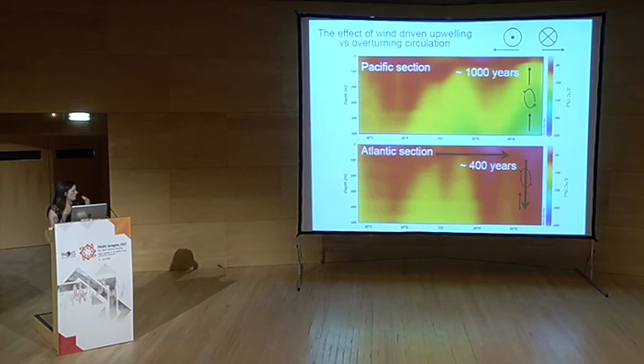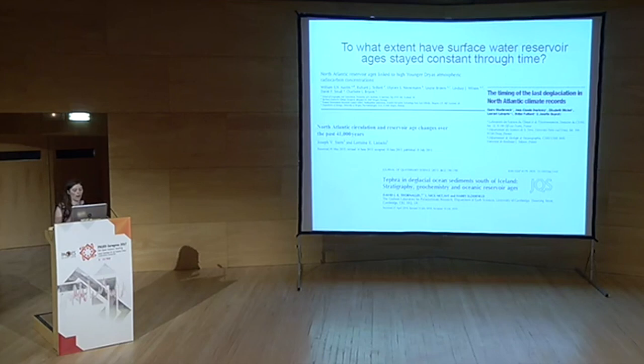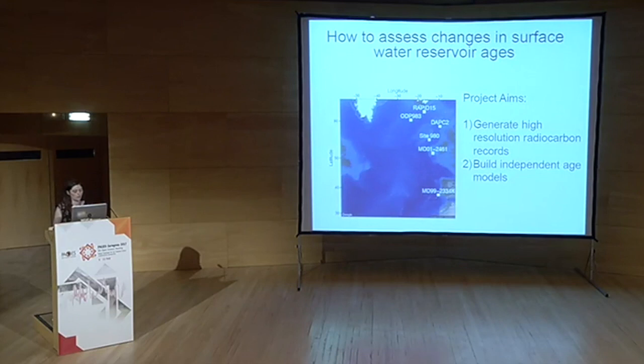Because of the intimate link between ocean circulation and surface water reservoir ages, there are questions about whether the modern 400-year offset has remained constant through time, especially in the North Atlantic where big circulation changes are expected during the deglaciation. A number of publications over the past 10 years suggest it has not remained constant. This project aims to reconstruct reservoir ages from multiple sites to better understand how they changed through deglaciation.